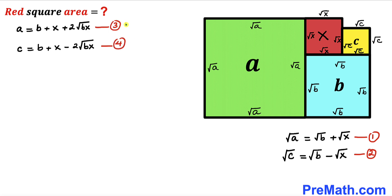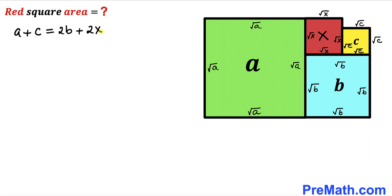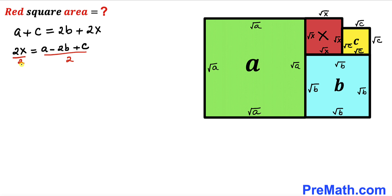Now we add equations three and four together. On the left side we get a + c. On the right side, the 2√(bx) terms cancel each other out, leaving 2b + 2x. So a + c = 2b + 2x. Moving 2b to the other side: 2x = a − 2b + c. Dividing both sides by 2, we get x = (a − 2b + c) / 2.